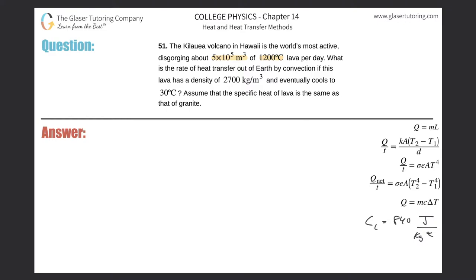What is the rate of heat transfer out of Earth by convection if this lava has a density of 2700 kg/m³ and eventually cools to 30°C? Assume the specific heat is that of granite.